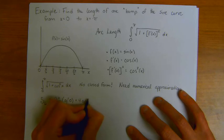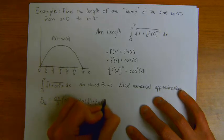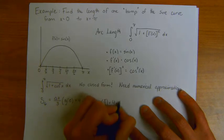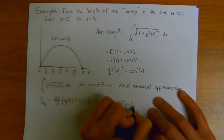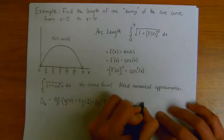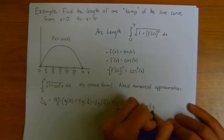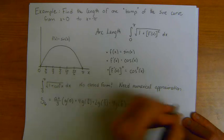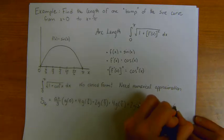Plus 2g of pi over 3, plus 4g of pi over 2, plus 2g of 2 pi over 3, plus 4g of 5 pi over 6, plus just one copy of the endpoint g of pi.